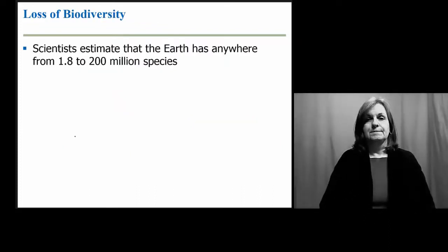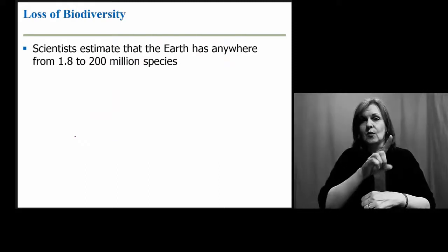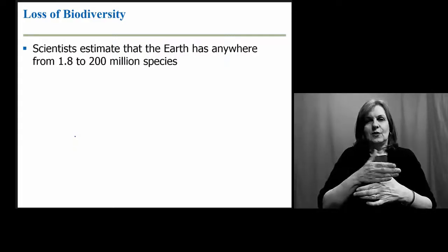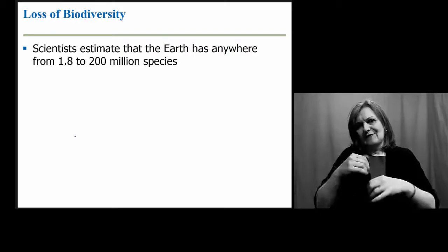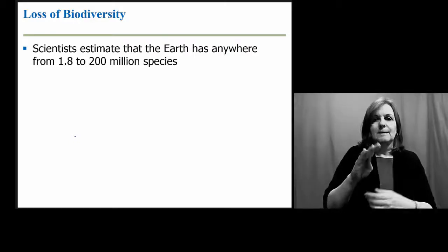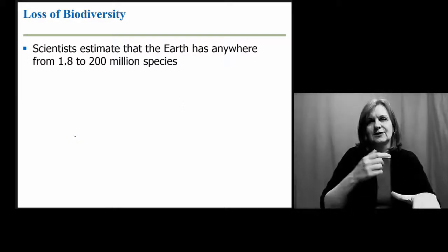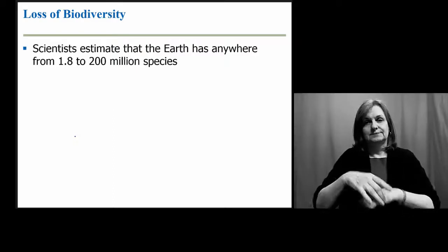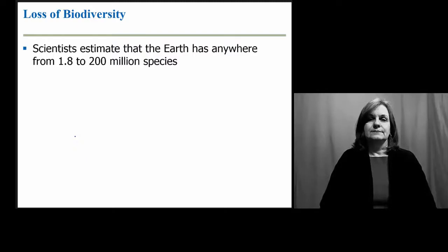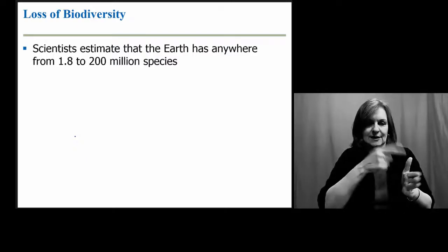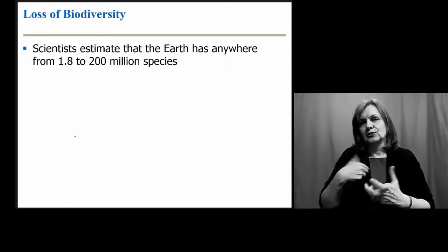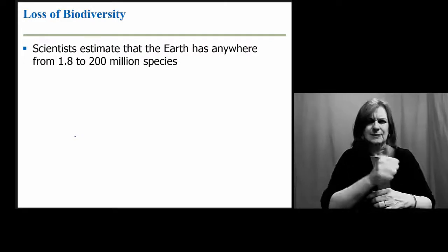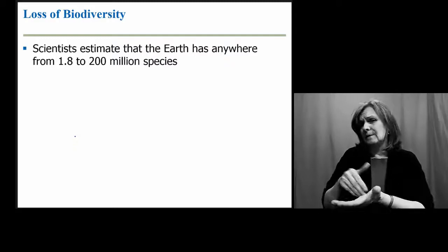It's estimated that on our planet we have anywhere from 1.8 to 200 million different species. We don't have a good handle on the number of different beetles in the Amazon, or the number of bacteria at the bottom of the ocean. So this is essentially an extrapolation trying to put us in the ballpark of the number of species on this planet. If we don't know our starting point, it's hard to understand what we're losing. If we say that in a given year we lose 10% of our species, is that 10% of 1.8 million or 10% of 200 million?